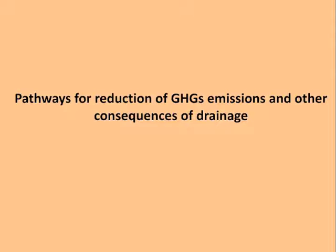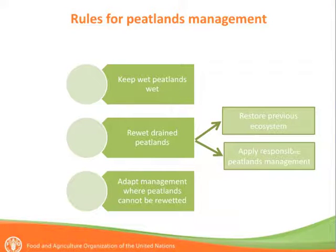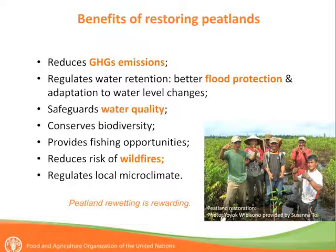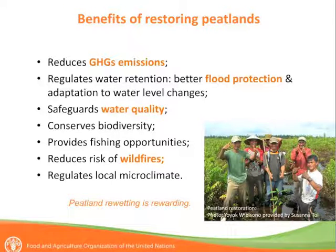What can be done to reduce greenhouse gas emissions and other consequences of drainage? Simple rules can be followed: all wet peatlands should be kept wet; drained peatlands should be rewetted — they can be rewetted and restored to previous ecosystem conditions, or on rewetted areas, responsible peatlands management can be applied. If rewetting is not possible, then adaptive management should be applied. Benefits of restoring peatlands are numerous: they reduce greenhouse gas emissions, regulate water retention, provide better flood protection, safeguard water quality, conserve biodiversity, provide fishing opportunities, reduce wildfire risk, and regulate local microclimate.